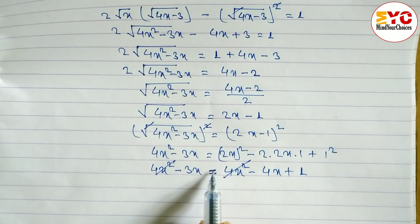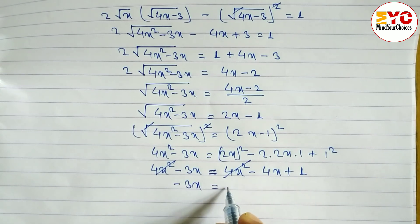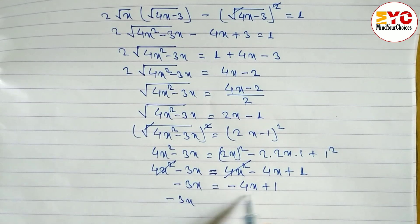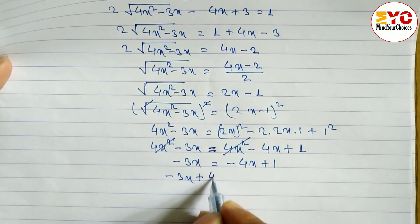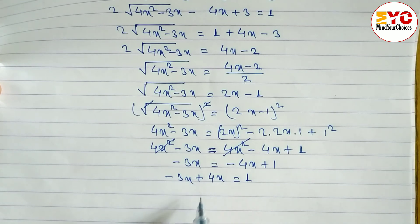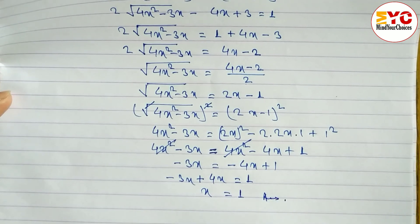Now arranging what remains: minus 3x is equal to minus 4x plus 1. Taking minus 4x to the left side, we change its sign to plus 4x. So: minus 3x plus 4x is equal to 1. Subtracting, we get x is equal to 1. That is the answer. Hope you understand this.